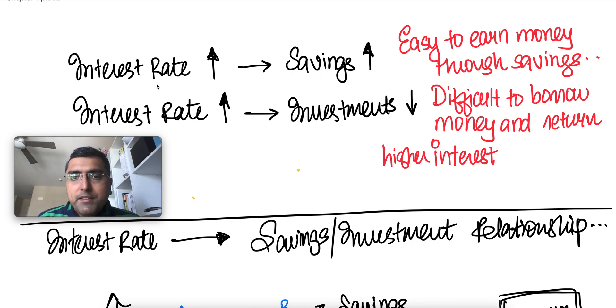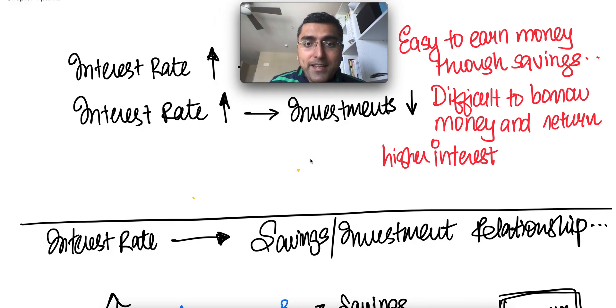So savings go up as interest rates go up and vice versa. If interest rate goes up, that means it's difficult for people to borrow money because now all of a sudden you have to pay 10% return versus 2% return for the house that you have.